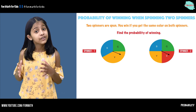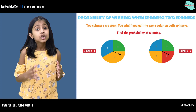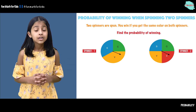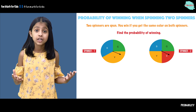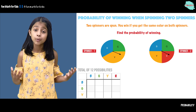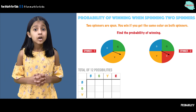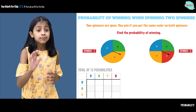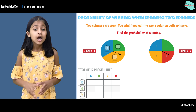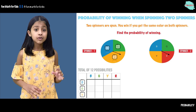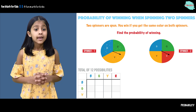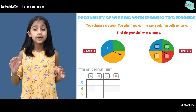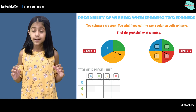So here we have a game. To win you need to get the same color on both spinners. So how many possibilities are there? There are twelve total possibilities. In this table we have spinner one which has blue, green, and yellow, and spinner two which has blue, green, yellow, and red.